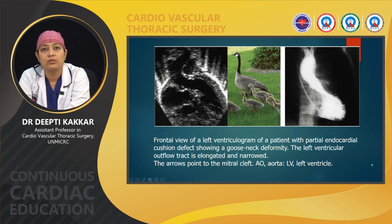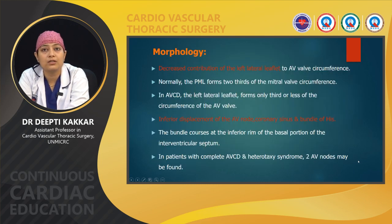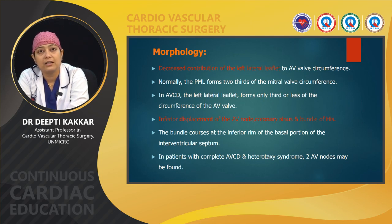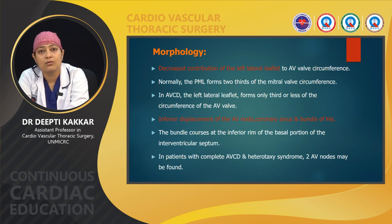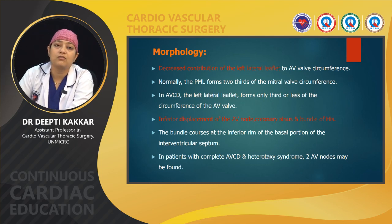The decreased contribution of the left lateral leaflet to the AV valve circumference occurs in AVCD. Normally the posterior mitral leaflet forms two-thirds of the mitral valve circumference, but in AV canal defect the left lateral leaflet forms only one-third or less. There is inferior displacement of the AV node, coronary sinus, and bundle of His. The bundle courses at the inferior rim of the basal portion of the interventricular septum, known as the nodal triangle. In complete AVCD with heterotaxy syndromes, two AV nodes may also be found.